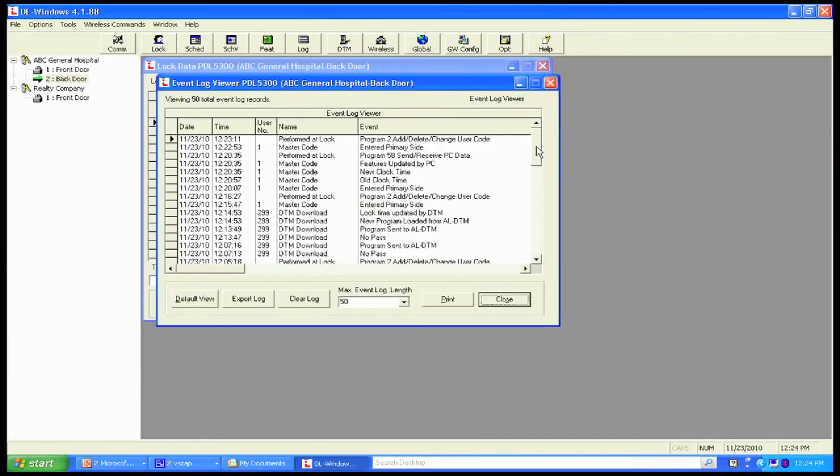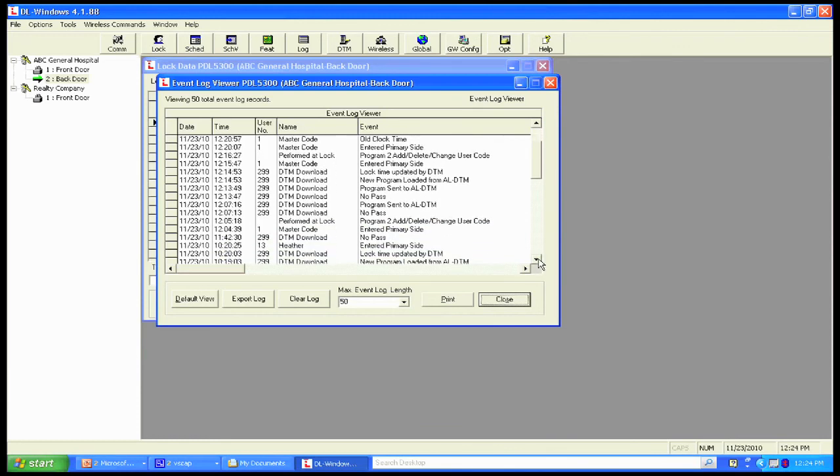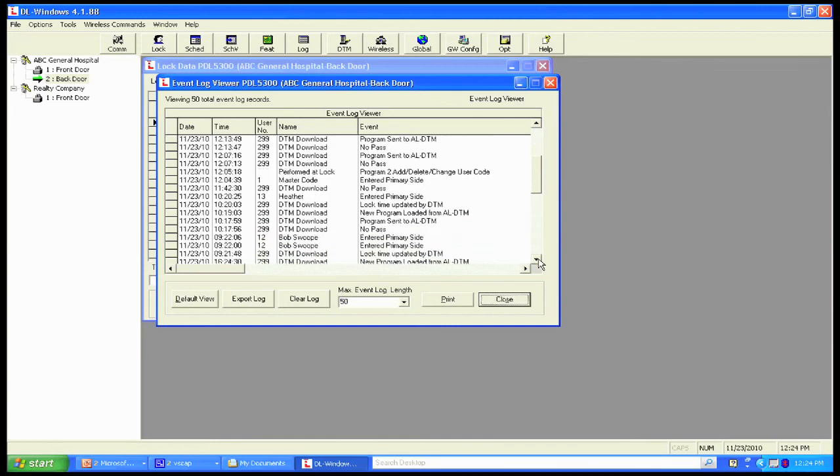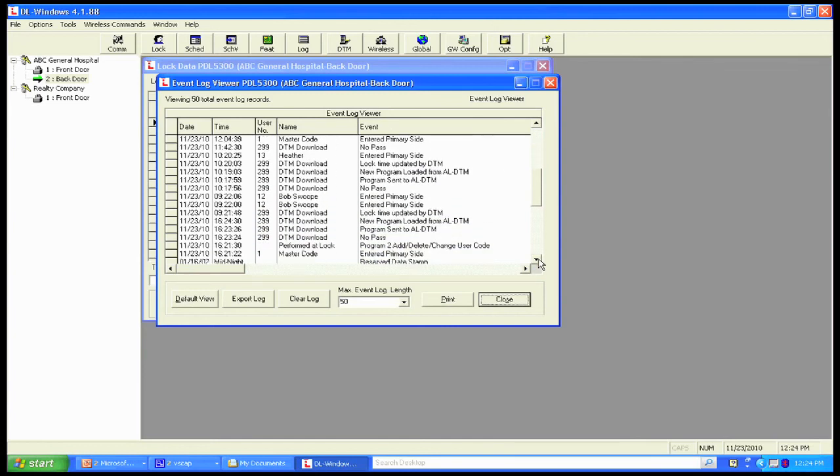When you look on the screen, what you're going to see is you're going to see all of the electronic transactions. At the lock, we performed add or delete or change user codes. That's when I added user 298 to the lock itself. You can also see it was entered from the primary side. Now what's unique about this lock is because it's double-sided, we have a primary side and we have a secondary side, that also means that you can set it up so a user can only get on one side or the other, and that's all done through the software. But the lock screw, or the event log viewer will tell you everything that's happened at the lock, including schedules, master code, the DTM is always considered a no pass, and what side of the door it enters from.